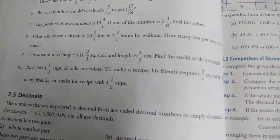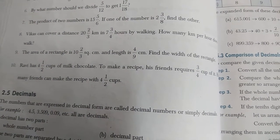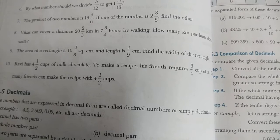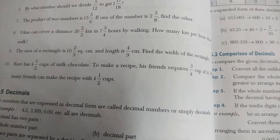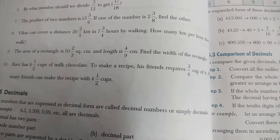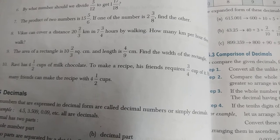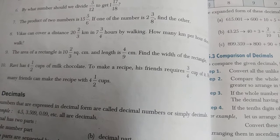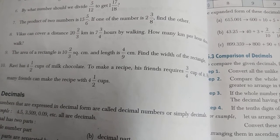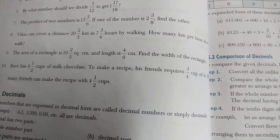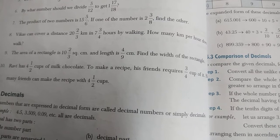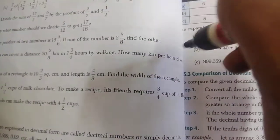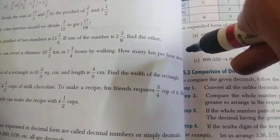In question 8, someone covered a distance of 22 and 2/3 kilometers in 7 and 3/4 hours by walking. We have to find the speed, the speed in kilometers per hour.